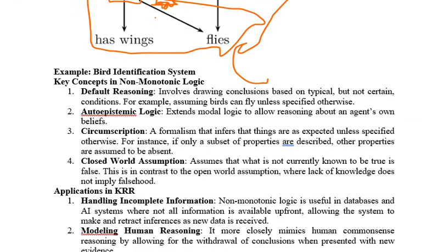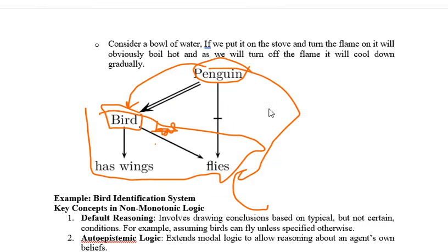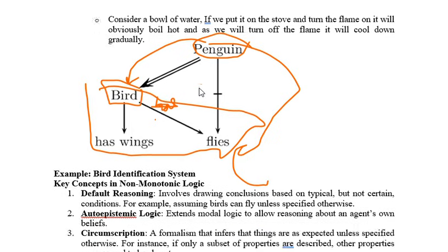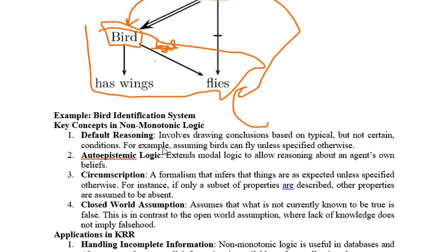Now let's look at some key concepts in non-monotonic logic: default reasoning, auto-epistemic logic, circumscription, and closed world assumption. Default reasoning means: based on some conditions we conclude something, but without full knowledge of all other conditions. In our example, without knowing that penguins cannot fly, we concluded that all birds can fly. By default, we consider that most birds can fly — that is default reasoning.